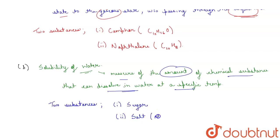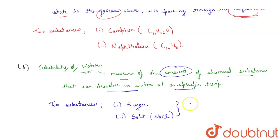So two substances that are soluble in water are sugar and salt, that is NaCl. Both sugar and salt after dissolving in water create sugar solution and salt solution.